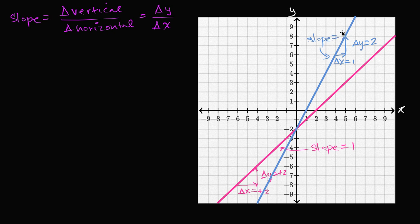Hopefully you're appreciating why this definition of slope is a good one. The higher the slope, the steeper it is — the faster we increase in the vertical direction as we increase in the horizontal direction.